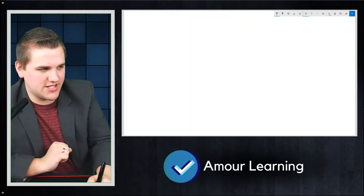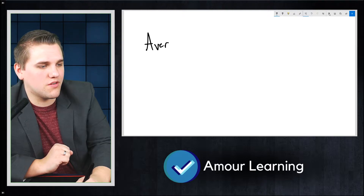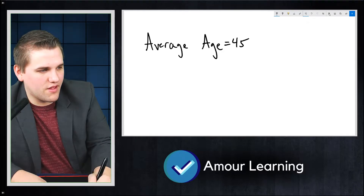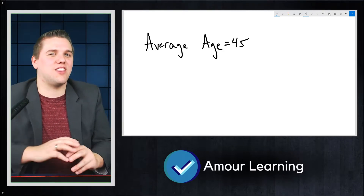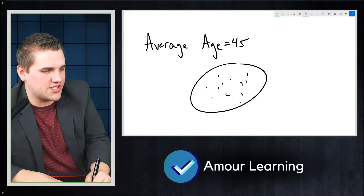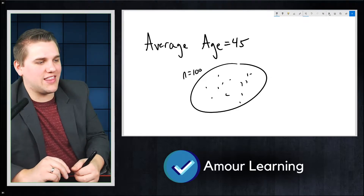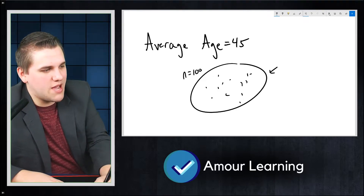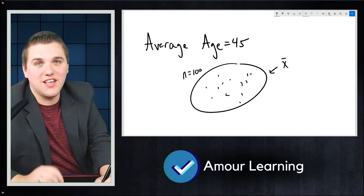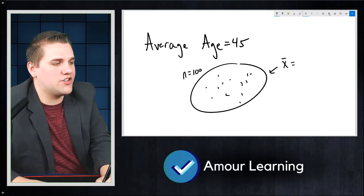Let's first talk about rare events. Let's say Apple comes out with a claim that the average age of their users is 45, and you don't necessarily think that's true. So you gather a sample of size 100, and you notice that the sample average — which is different from the population average — is like 43.